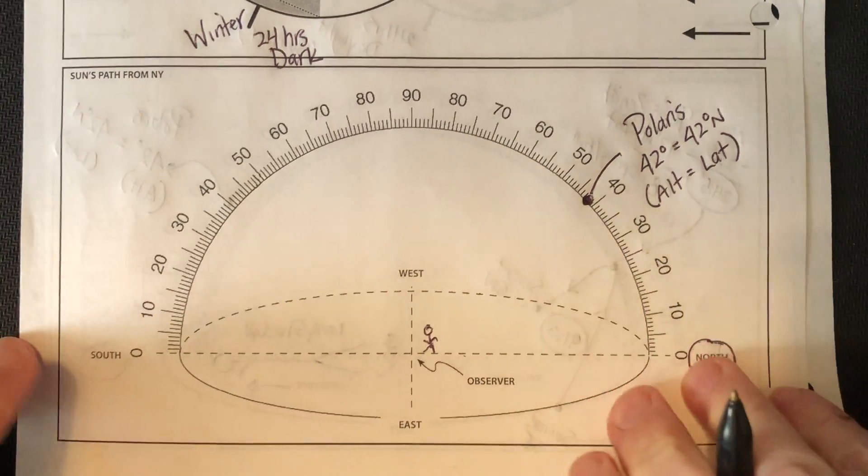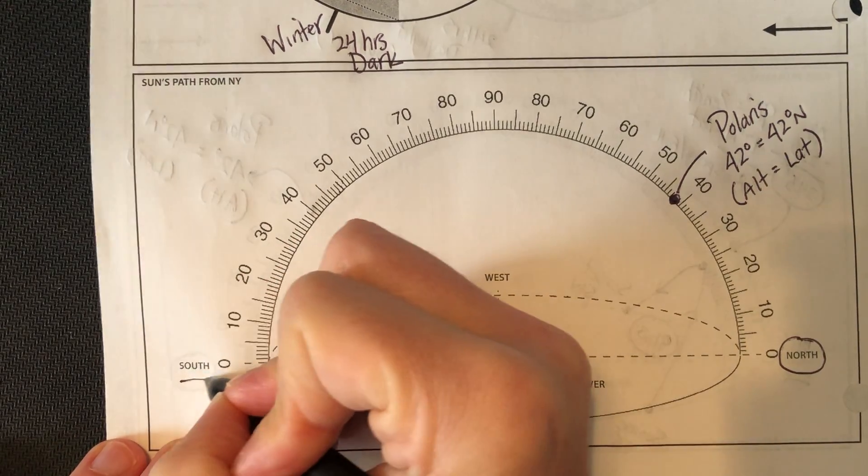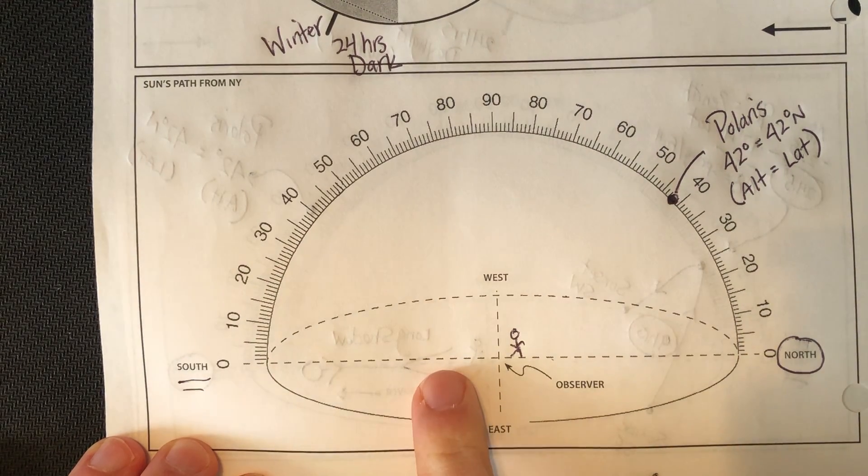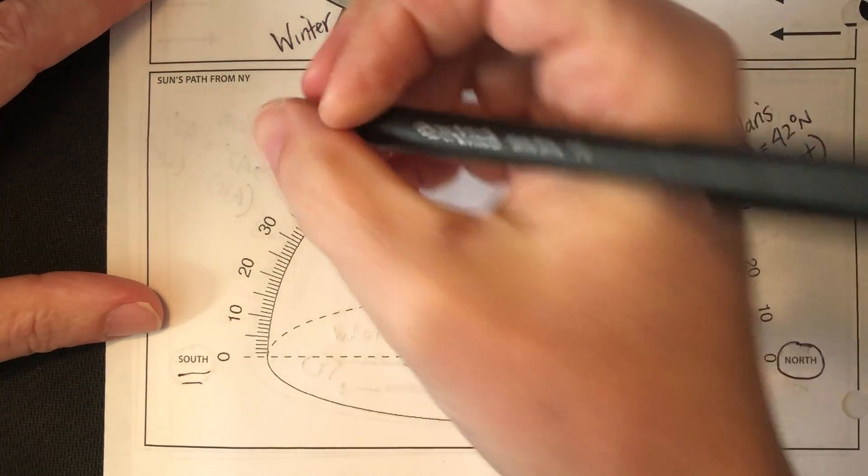In the summertime, you're going to look south, just like in winter, just like in spring and fall. You're going to look south for that noon sun. Let me show you again how to figure that out.